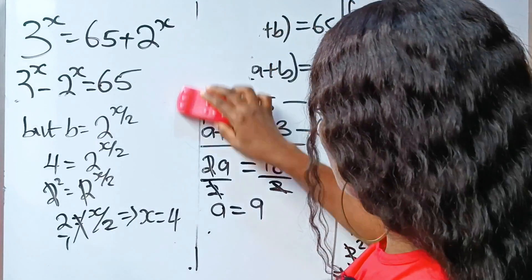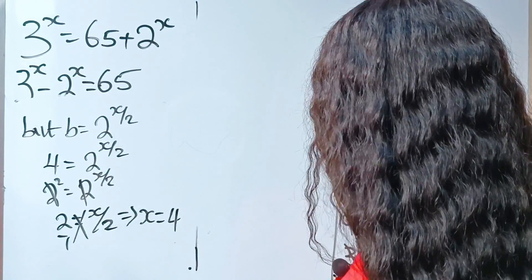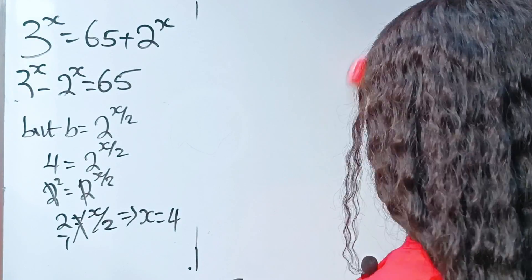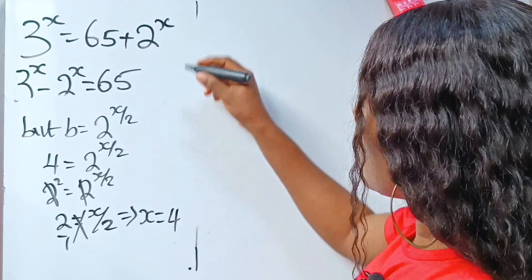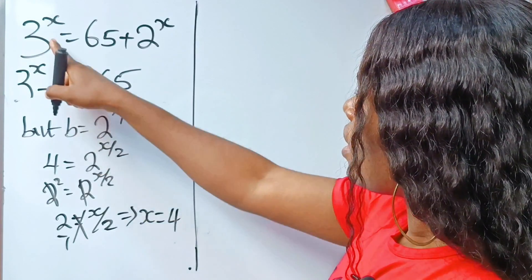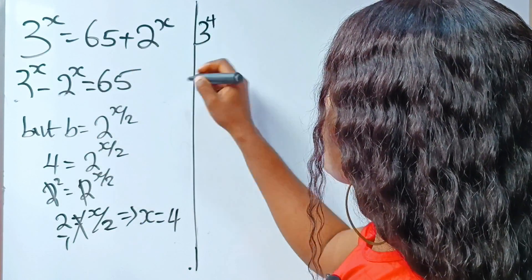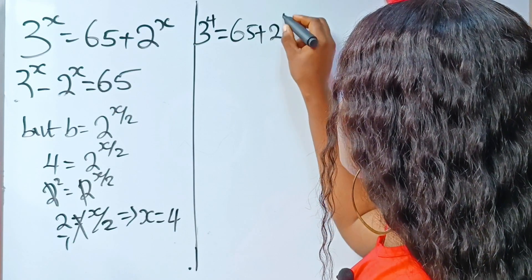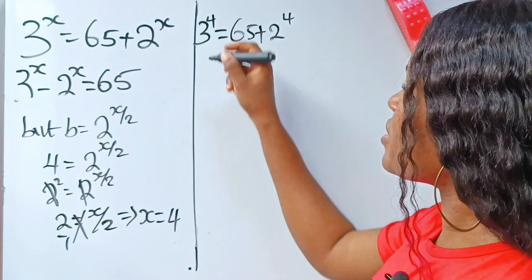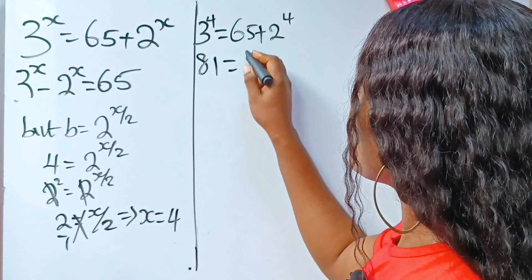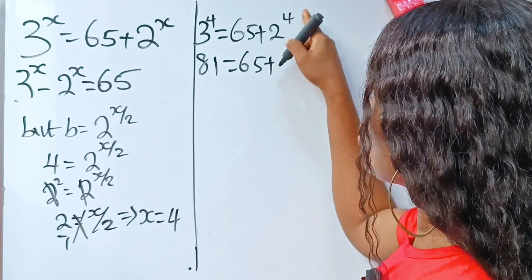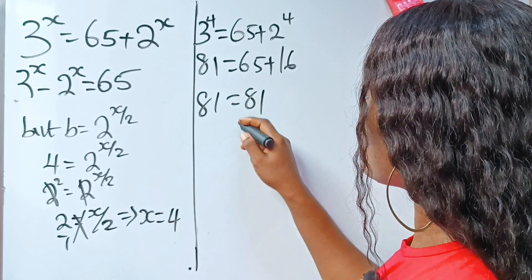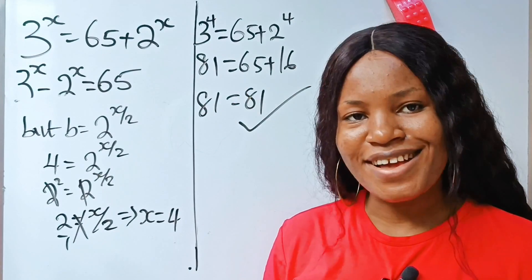Now let's substitute into the main equation to verify. We have 3 to the power of 4 is equal to 65 plus 2 to the power of 4. 3 to the power of 4 is 81, and 65 plus 2 to the power of 4 is 65 plus 16, which is 81. So 81 equals 81 — that means we are right.